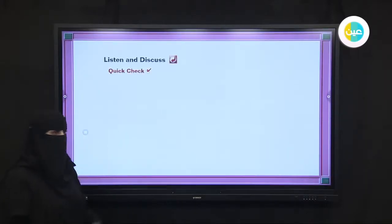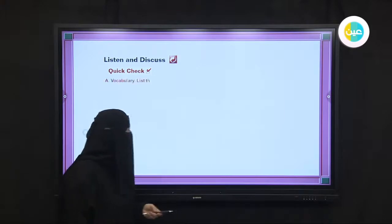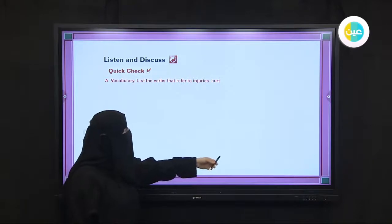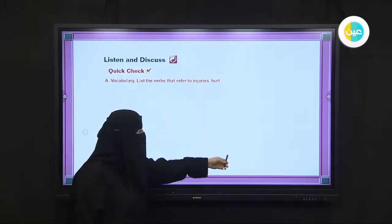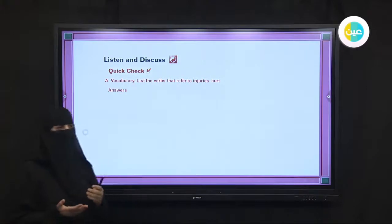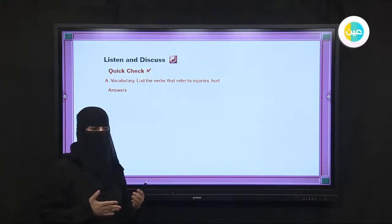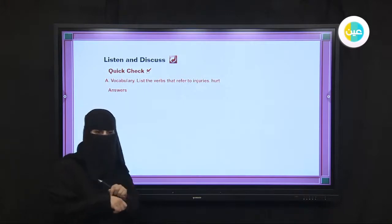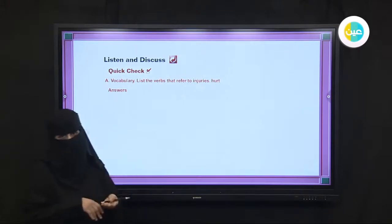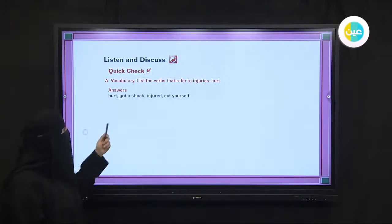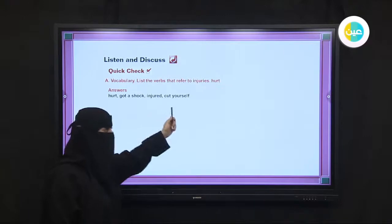After we listen to that conversation between Samir and his friend, we want to discuss and make a quick check. Vocabulary lists the verbs that refer to injured and hurt. What's the meaning for injured and hurt? Hurt, it means something happened to you, bad things. Injured, it's something cut to your body and makes the blood go out. So we have answers for that: hurt, got a shock, injured or cut yourself.